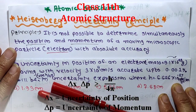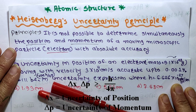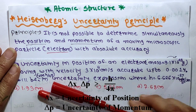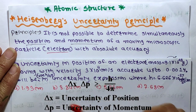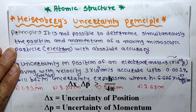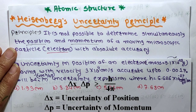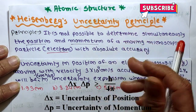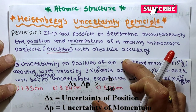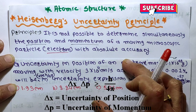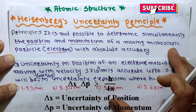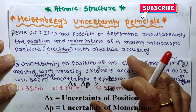Hello students, welcome to my channel. In this channel I will teach chemistry in the simplest way. Today's topic is atomic structure — Heisenberg's Uncertainty Principle — and solving questions on this uncertainty principle. Now let's start the session.